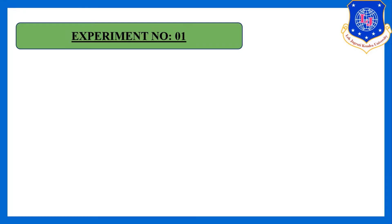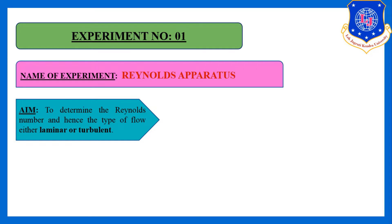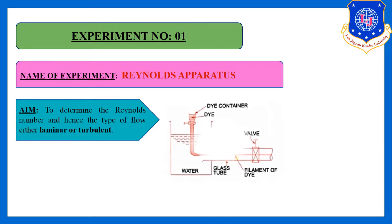Experiment number 1 is the Reynolds Apparatus. The main aim of this experiment is to determine the Reynolds number, and from that Reynolds number we can evaluate the type of flow — either laminar or turbulent.